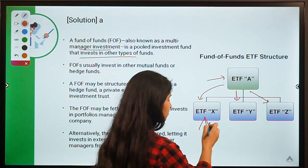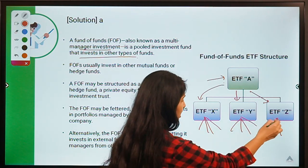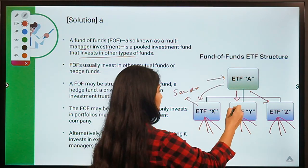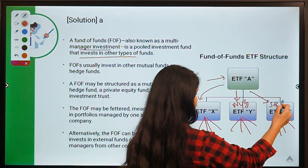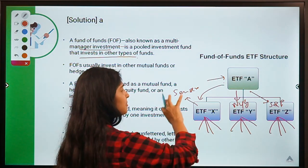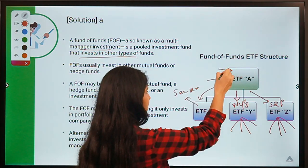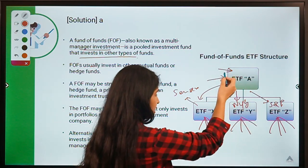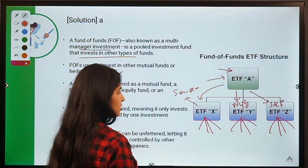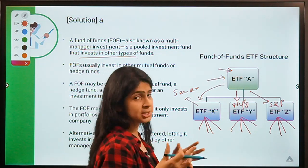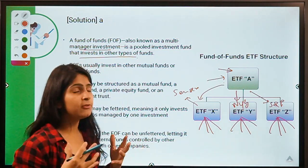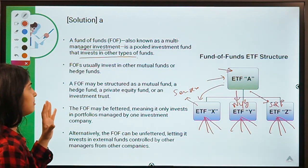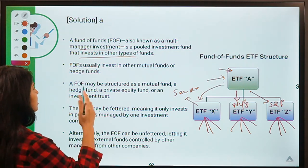For example, ETF X tracks Sensex, ETF Y tracks Nifty, ETF Z tracks S&P. An investor in FoF ETF A is indirectly exposed to Sensex, Nifty, and S&P. This provides an additional level of diversification — a whole new layer on top of normal fund diversification.